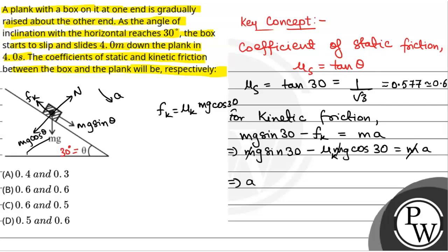We will have A is equal to g sin 30, and sin 30 is 1 by 2. So A will be equal to g by 2 minus mu_k into g into cos 30, which is root 3 by 2. So this will be mu_k into root 3 g by 2.